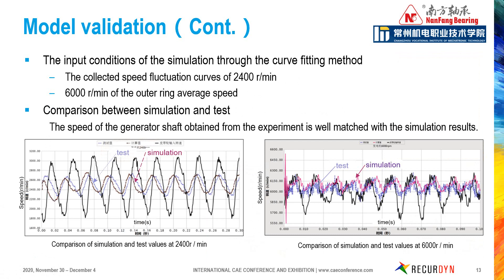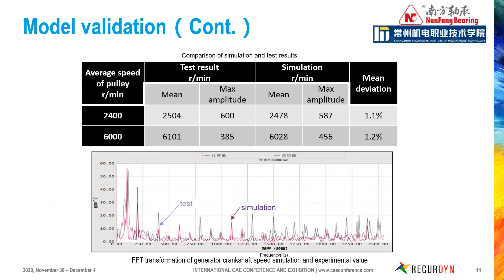The generator shaft speed from rapid simulation is compared with the test data for different pulley speed fluctuations. The purple curve is the simulation result and the blue one is the test result. From the comparison, we can see RecurDyn simulation matches well with the test results in the time domain. The mean deviation between test and simulation is less than 2%, and the frequency domain results also match well with each other. So we can confirm that the RecurDyn simulation model is a validated model.